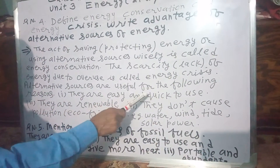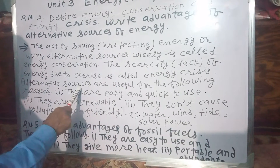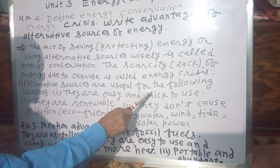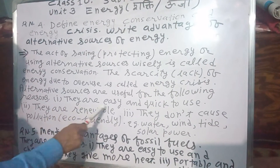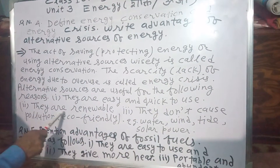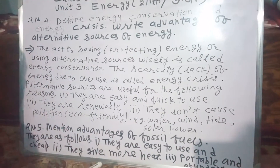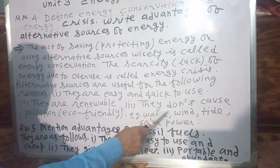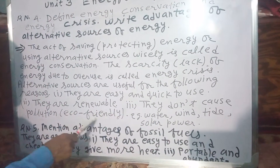The advantages of alternative sources of energy are as follows: number one, they are easy and quick to use; number two, they are renewable, meaning we can make them again and again; number three, they don't cause pollution, meaning they are eco-friendly. Examples: water, wind, tide, solar power, atomic energy, geothermal energy, etc.